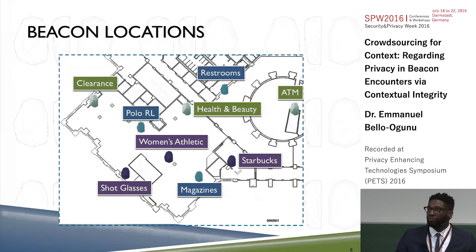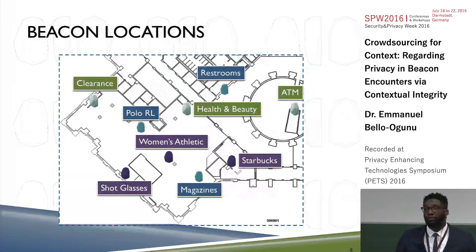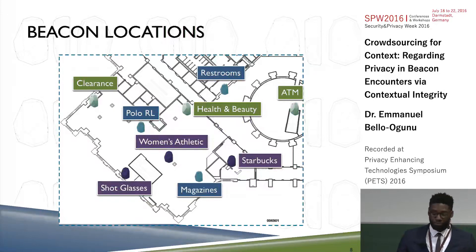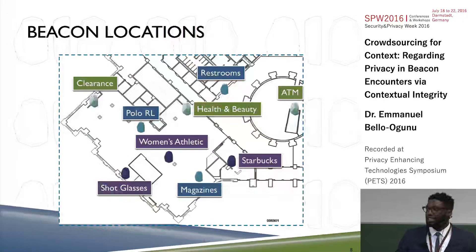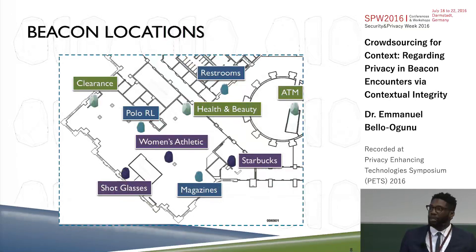I chose beacons that I felt would be varied as far as the type of category and privacy that users would have. I had the ATM as my ground truth benchmark for what a private beacon would be, since most people probably wouldn't care to share every time they went to an ATM. On the opposite end of the spectrum, the Starbucks beacon was the benchmark for the least sensitive or most public beacon. With those two benchmarks, I can compare the remaining beacons to see how sensitive they may have been according to the users in the study.